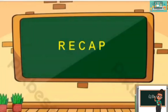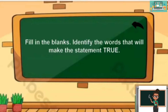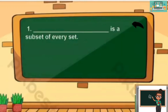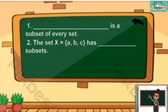Now let's have a recap. Fill in the blanks. Identify the words that will make the statement true. Are you ready? Number 1: blank is a subset of every set. Number 2: The set X contains elements A, B, and C — has blank subsets.